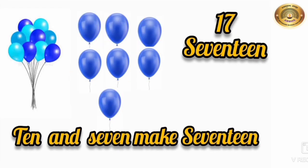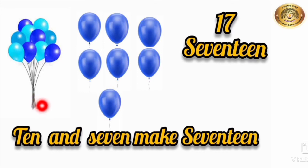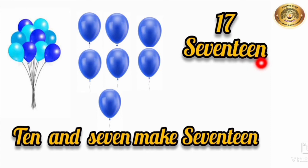The next number which comes after 16 is 17. Let's count these balloons: 1, 2, 3, 4, 5, 6, 7. Here we have 1 ten, and here we can see 7 more balloons. So children, 10 and 7 make 17. The spelling of 17 is S-E-V-E-N-T-E-E-N. 17.